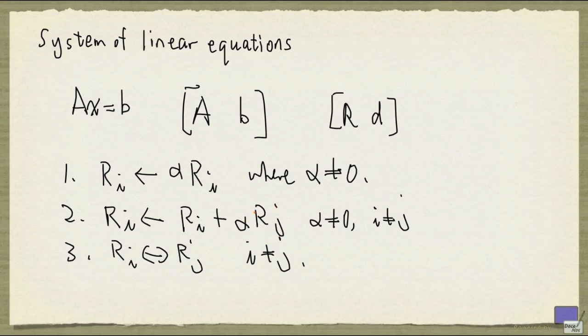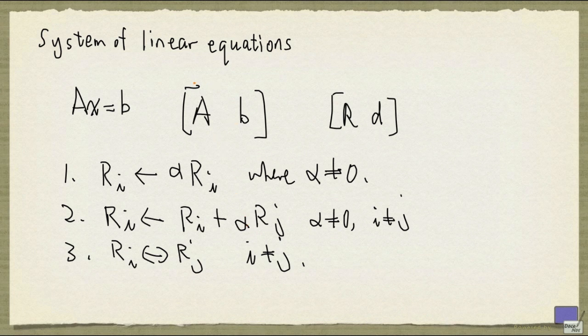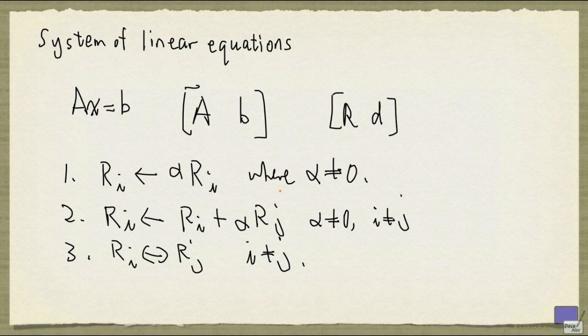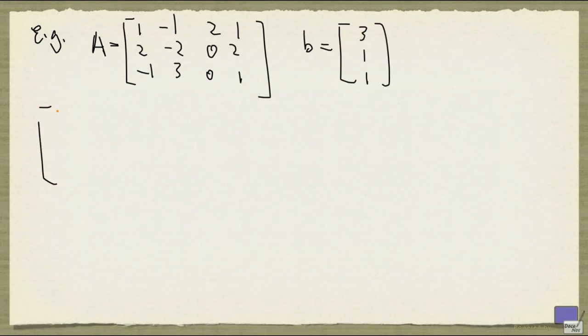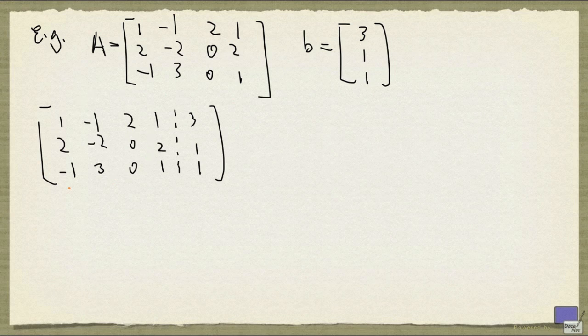So these are the elementary row operations. And using these operations, you can transform a matrix into reduced row echelon form. Let's work through an example. Let A be the following matrix, and B be 3, 1, 1. So the augmented matrix will look like this. Very often, people put a vertical dotted line between the coefficient matrix and the right-hand side tuple.